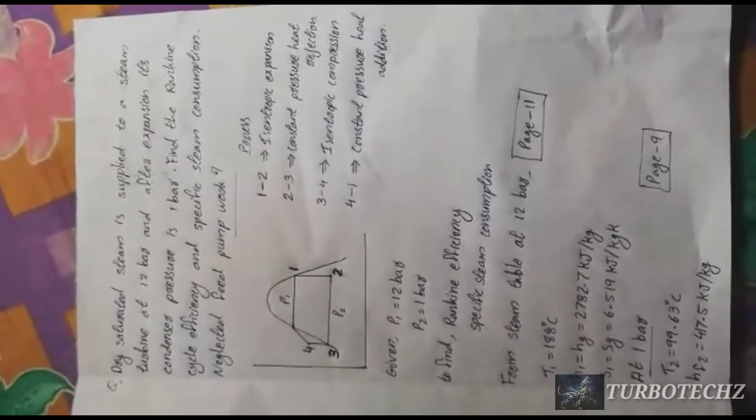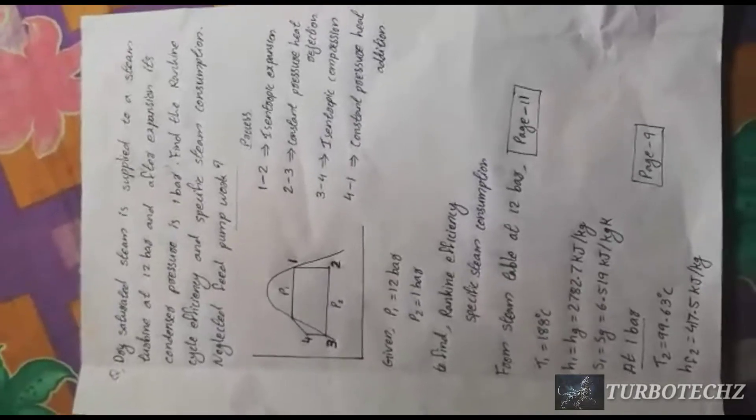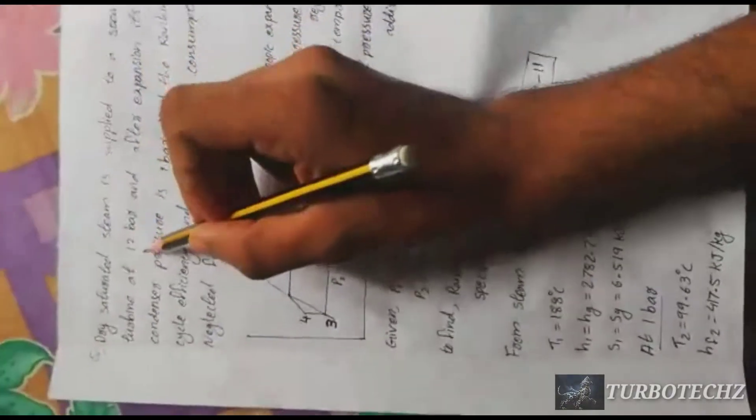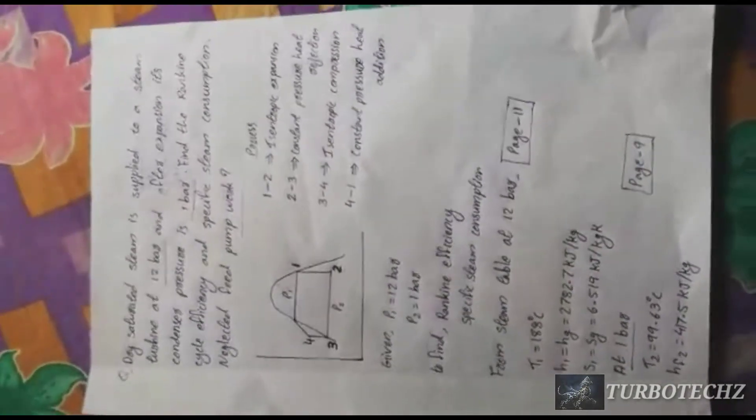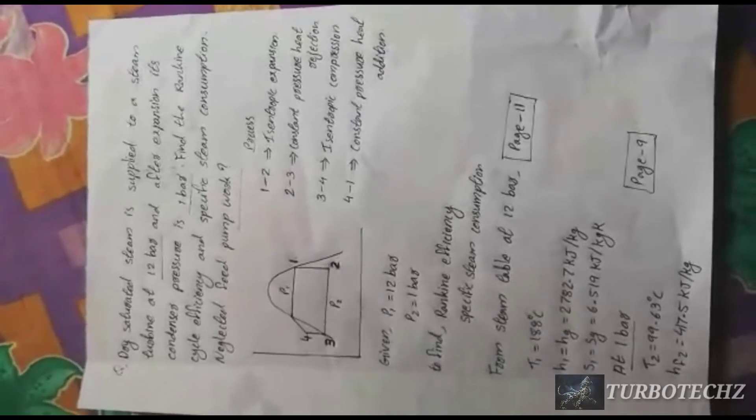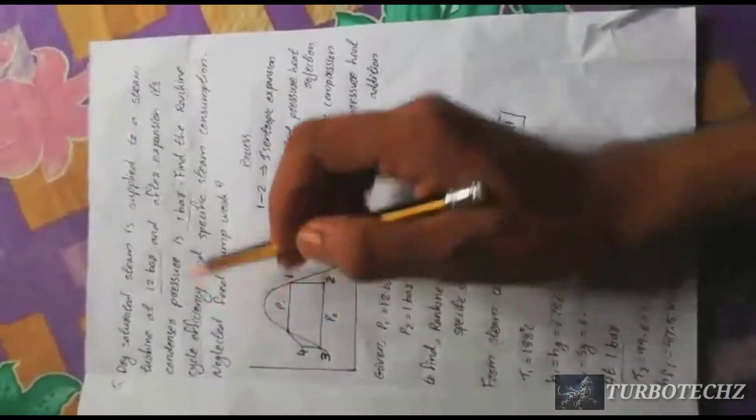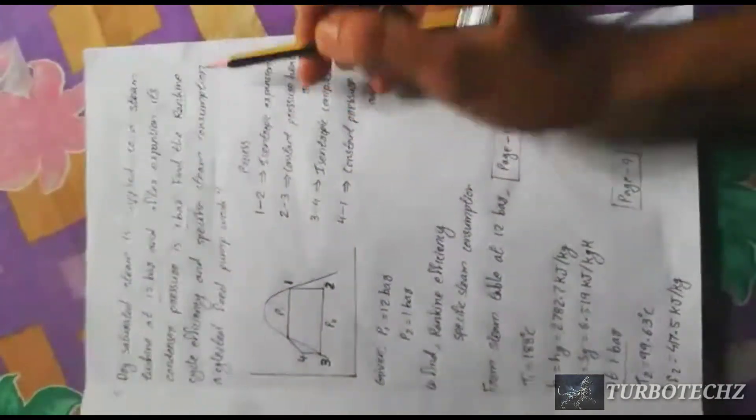Welcome to the question. Dry saturated steam is applied to a steam turbine at 12 bar pressure P1, and after expansion its condenser pressure is 1 bar P2. You find the Rankine cycle efficiency and specific steam consumption.